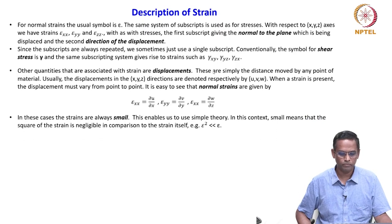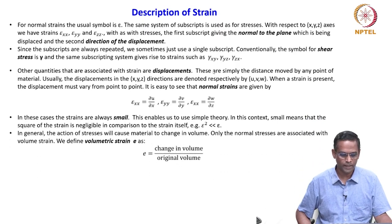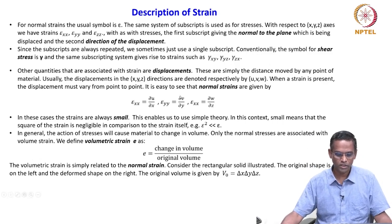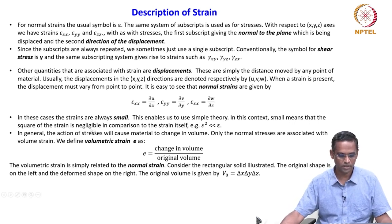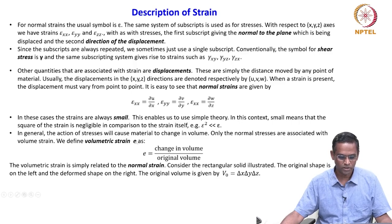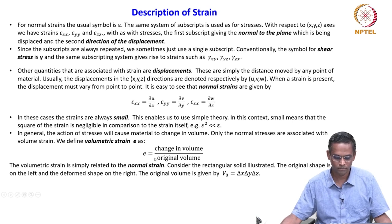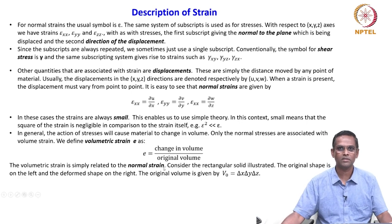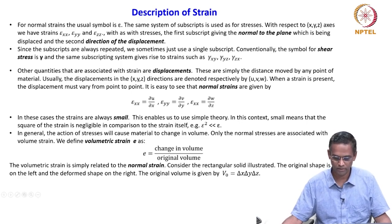Before we get into the details of normal and shear strain, there is another term we have seen that is called volumetric strain, which is denoted as small e, which is a change in volume divided by original volume. This volumetric strain is also simply related to normal strain, and that is exactly where I stopped yesterday.